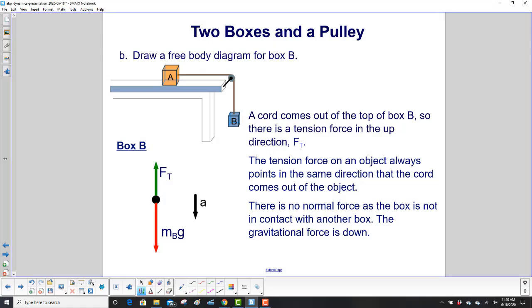Let's move to box B. A cord comes out of the top of box B, so there is a tension force in the up direction, F sub T. The tension force on an object always points in the same direction that the cord comes out of the object. There's no normal force here. This box is not in contact with another box. The only other force we have is the gravitational force.